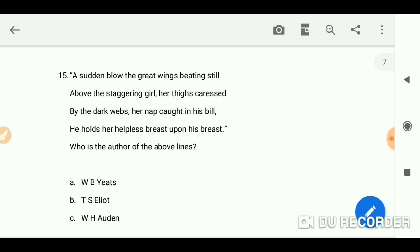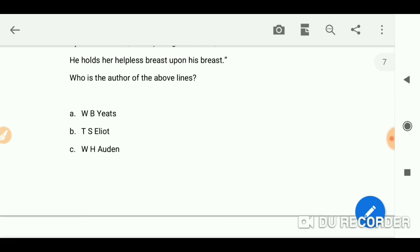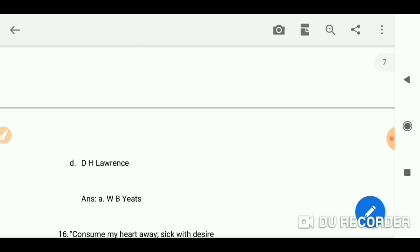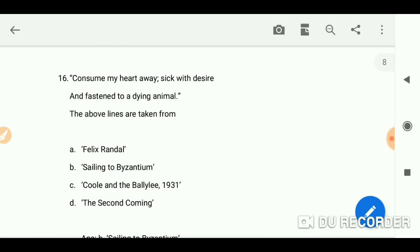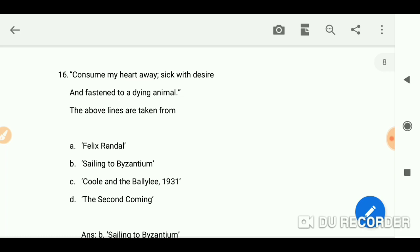A sudden blow, the great wings beating still above the staggering girl, her thighs caressed by the dark webs, her nape caught in his bill. He holds her helpless breast upon his breast. Who is the author of these lines? W.B. Yeats. Consume my heart away, sick with desire and fastened to a dying animal. The other line is taken from Sailing to Byzantium.